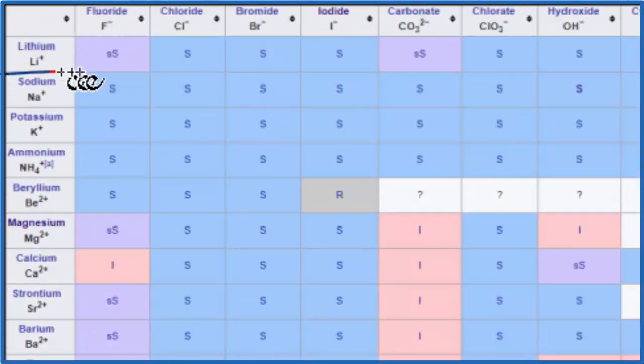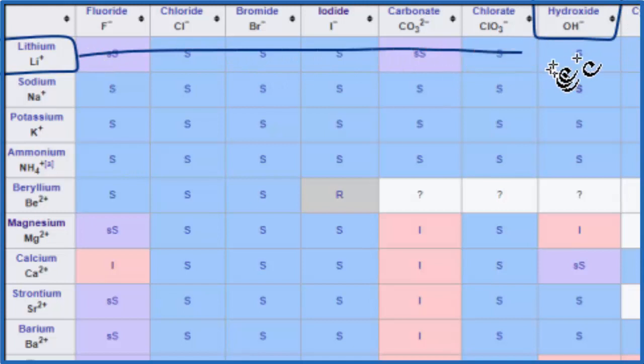So lithium, right here, LiOH, and then the anion, the negative ion, hydroxide. So we go over here, and we see that lithium hydroxide, that S, that means it'll be soluble in water. It'll dissolve, it'll dissociate into Li plus and OH minus ions. These will be aqueous ions in water.